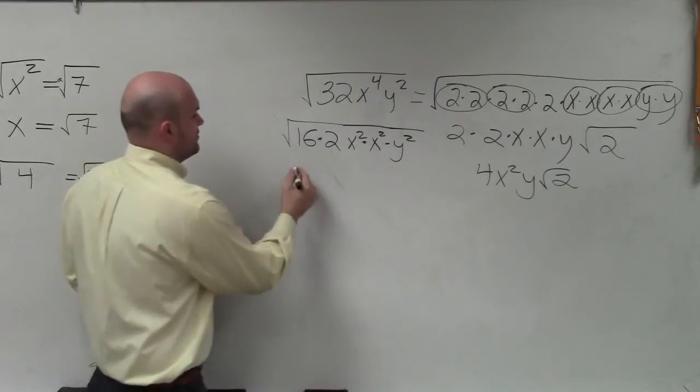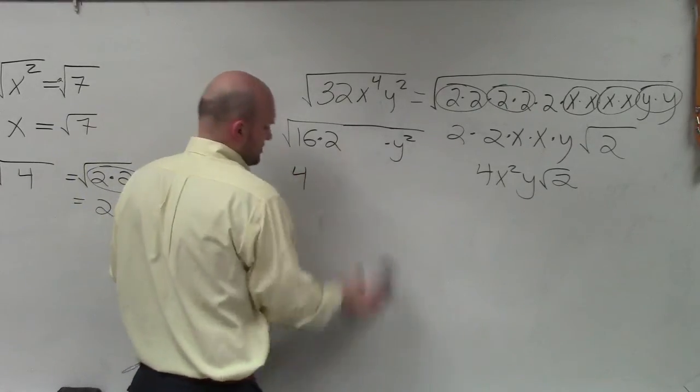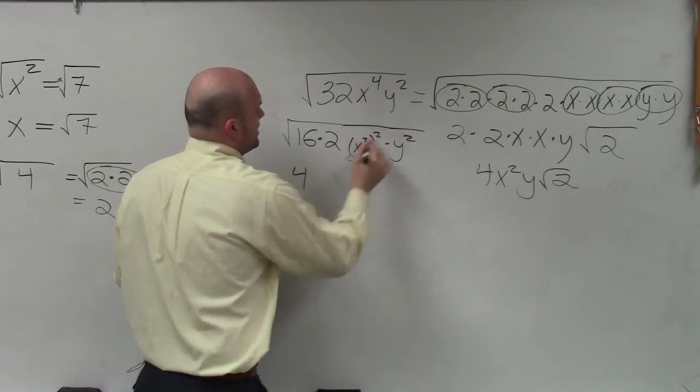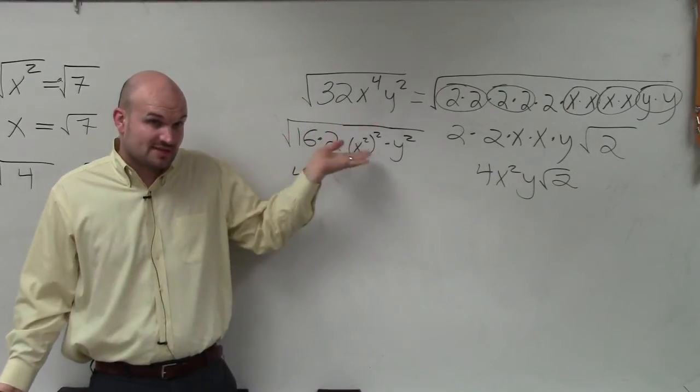Well, the square root of 16 is 4. You can also write x squared squared. So therefore, the square root of x squared squared, if you wrote this as a square root, would be x squared.